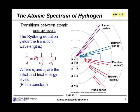Rydberg developed an equation which allowed the calculation of the wavelength corresponding to any given transition. You can see the equation there, and ni and nf are the initial and final energy levels. R is a constant, it's the Rydberg constant.